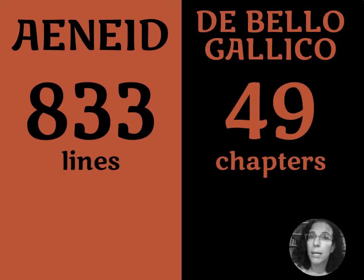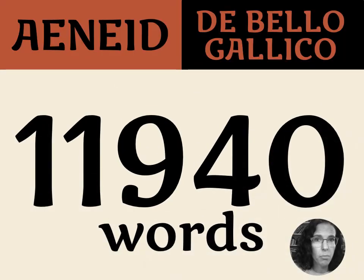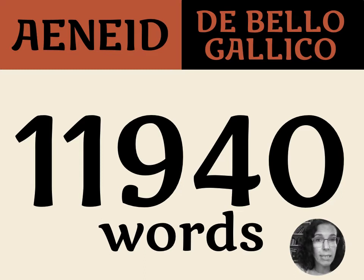Over the course of the year, you're going to read 833 lines of Virgil's Aeneid and 49 chapters of De Bello Gallico. As you can see, that's a lot of words. I put this up there not to intimidate you, but just to remind you that the AP Latin course is a serious Latin course — it's one that you should be proud that you're taking. It is similar to a fifth semester college course; it isn't an intro college course. And I will help you every step of the way to get through it, but we're going to be covering a lot of material.